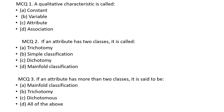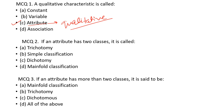First question is: a qualitative characteristic is called? The answer is option C — Attribute. Attributes are called qualitative data. So in Association of Attributes, we are dealing with attributes which are qualitative in nature.